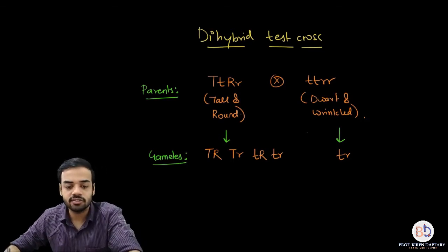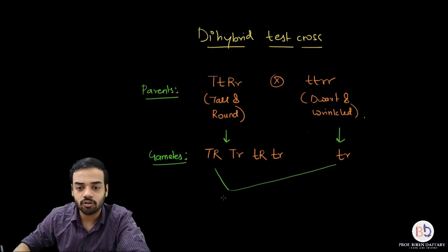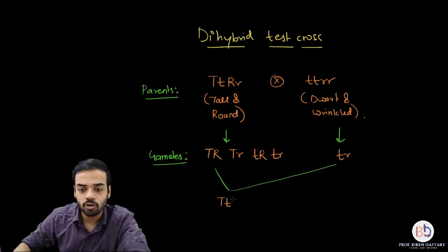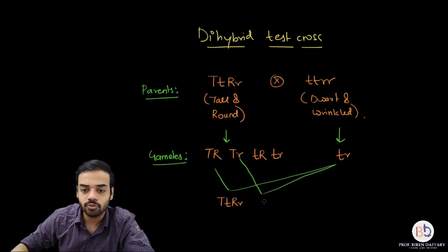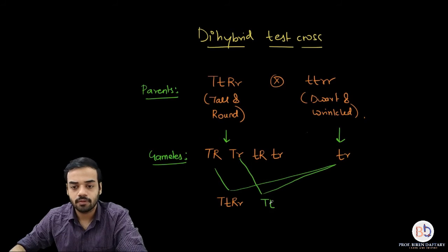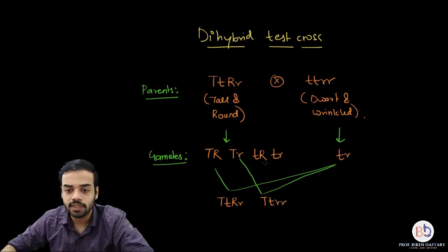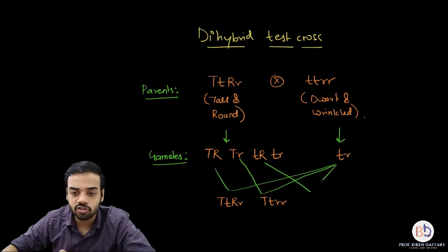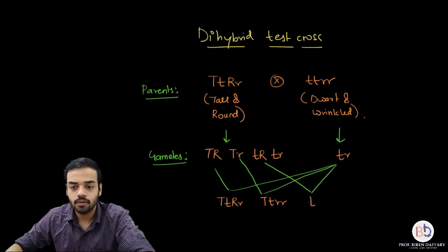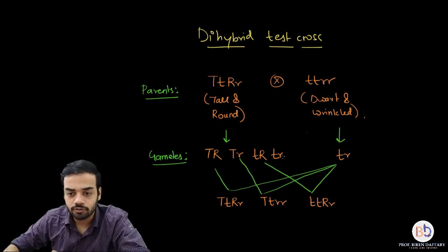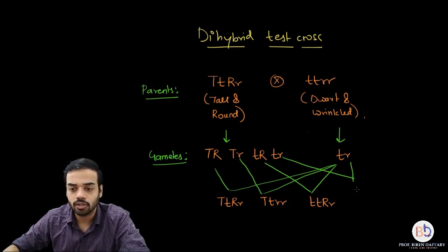The first possibility is combining the capital T capital R gamete with the small t small r gamete, giving capital T small t capital R small r. The next possibility is combining capital T small r with small t small r, giving capital T small t small r small r. The third possibility is small t capital R combined with small t small r, giving small t small t capital R small r. And the last offspring is going to be small t small t small r small r.